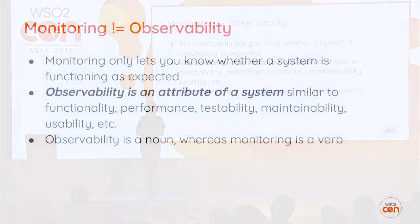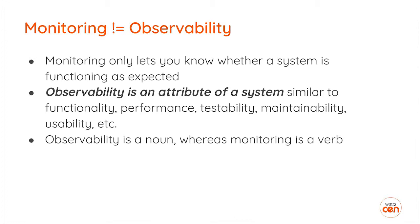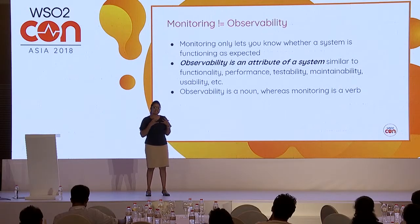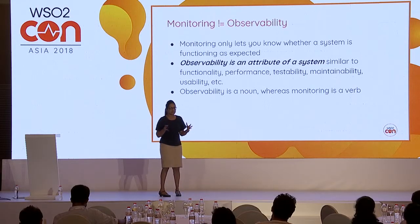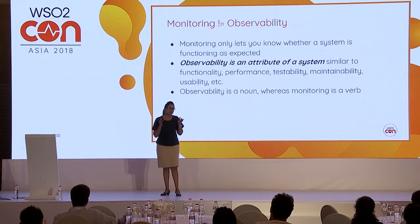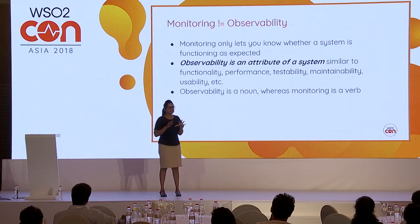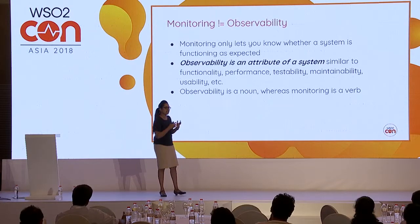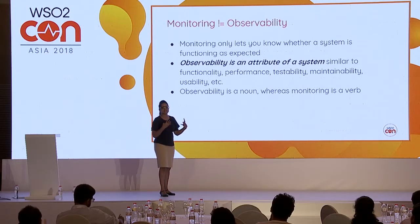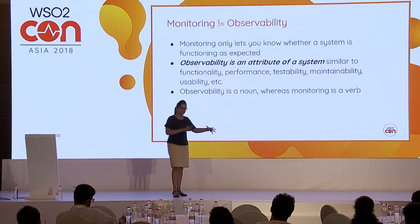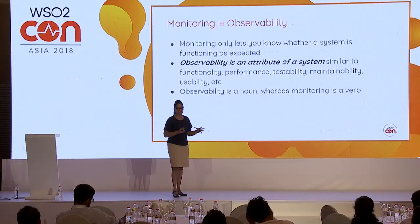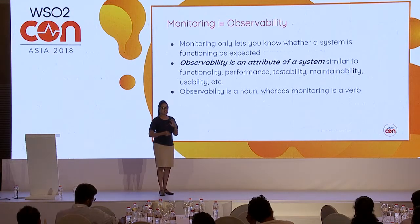Most people have the mindset that monitoring is actually observability, but we have to understand one concept — it is actually not. Monitoring will let you know whether the system is functioning at the expected level. You know how it's supposed to function, you have some targets, and you keep checking whether the system is producing those targets. Whereas observability is an attribute of a system — like performance, testability, maintainability — the transparency of the system is an attribute. So monitoring is not actually observability.